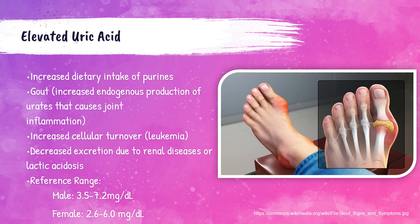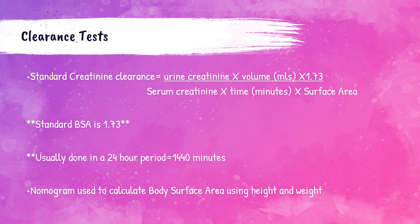Gout very commonly causes swelling and painfulness in the big toe, as shown in the picture on the right side of the slide. Uric acid can also be elevated in increased cellular turnover, such as leukemia, which you'll learn about in your hematology courses. The reference range for uric acid in normal men is 3.5 to 7.2 milligrams per deciliter, and in females the normal range is 2.6 to 6.0 milligrams per deciliter.